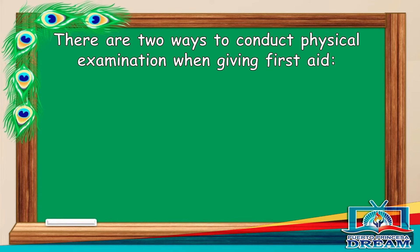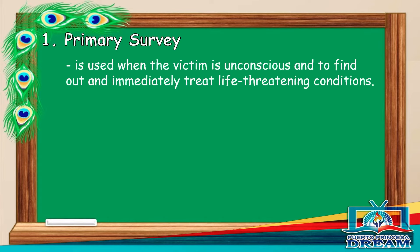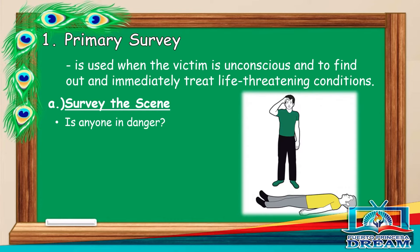There are two ways to conduct physical examination when giving first aid: the primary survey and the secondary survey. Primary survey is used when the victim is unconscious and to find out and immediately treat life-threatening conditions. Under primary survey, survey the scene — if anyone is in danger, can the danger be easily managed?